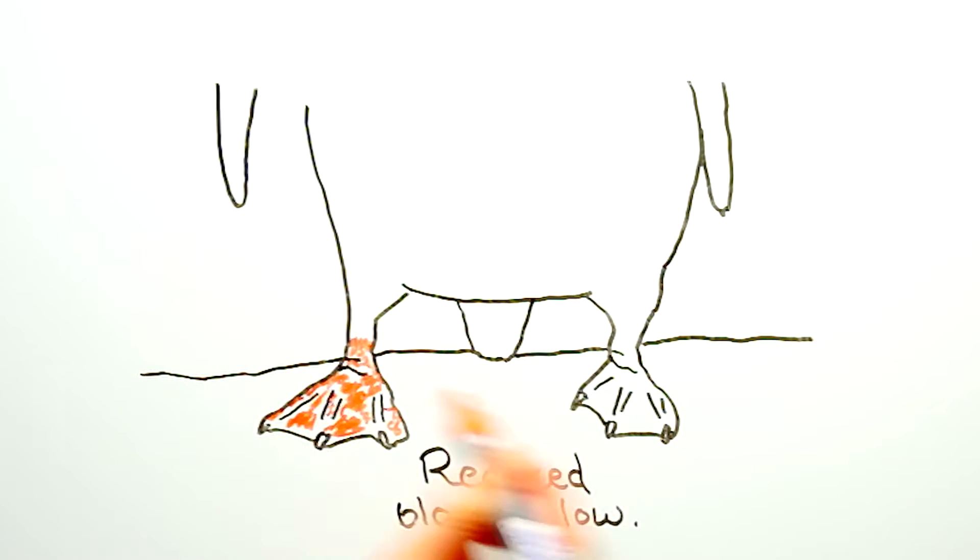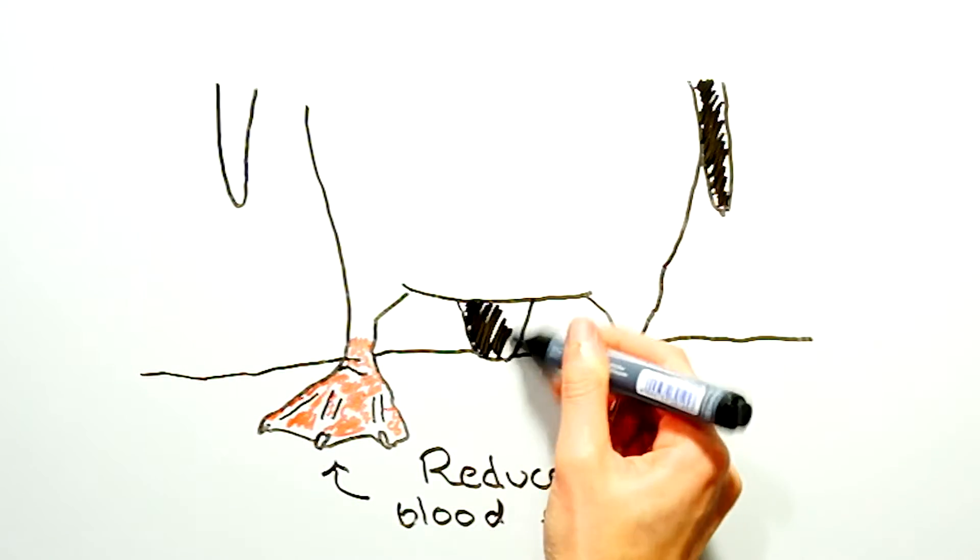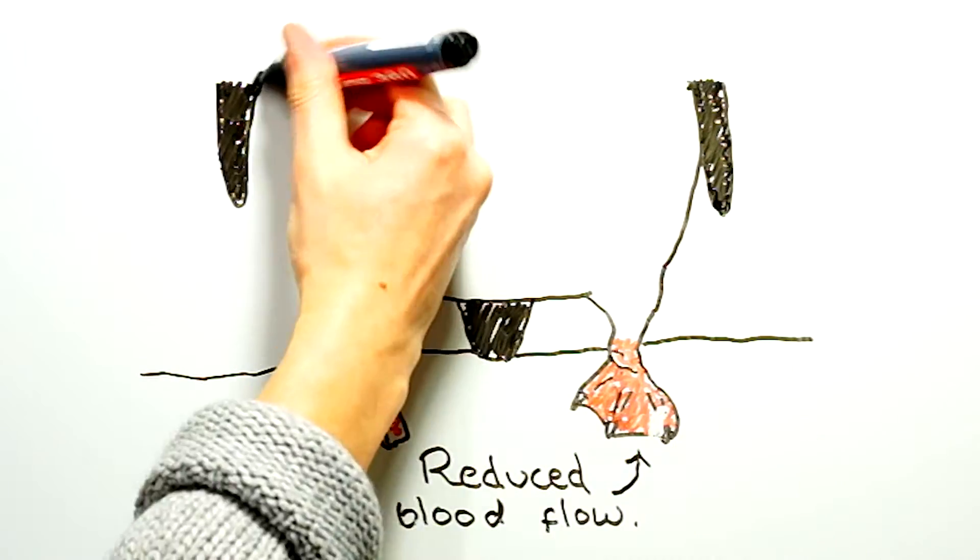This minimizes the amount of blood which goes to the feet, hands, or flippers, to just enough to keep the cells alive, but prevents unnecessary heat loss. And this is why in winter, your hands will look very pale.